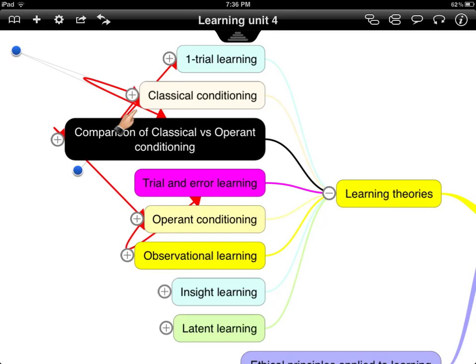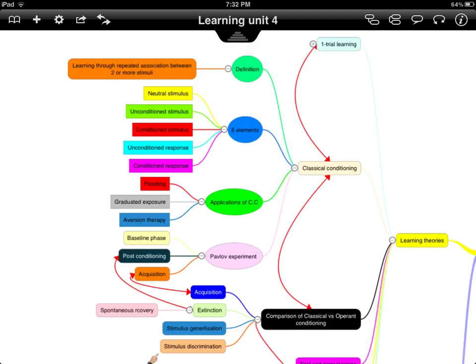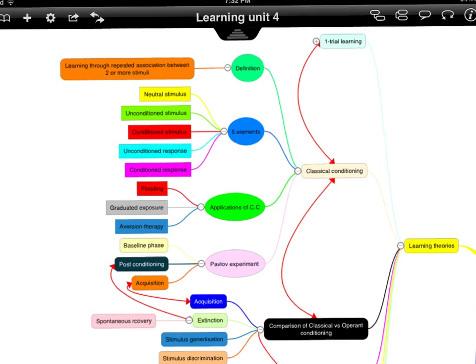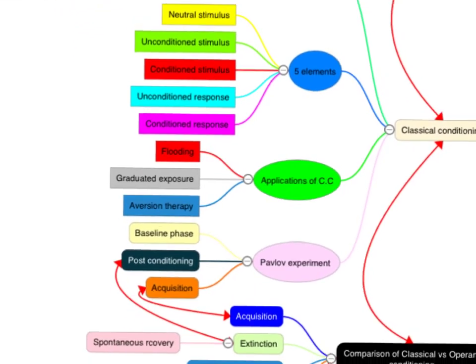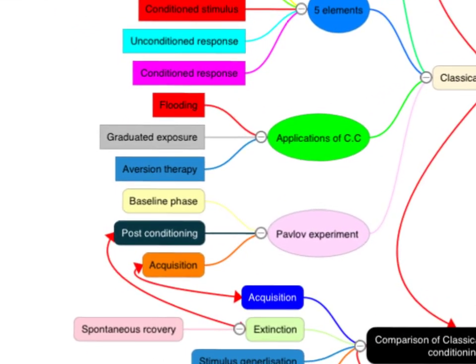In Unit 4, there's a variety of learning theories we need to cover. In this clip, we're just going to focus on classical conditioning. In terms of what we need to know about classical conditioning, I've already done a clip where we defined classical conditioning and went through the five elements. In a future clip, I will go over the applications, which includes flooding, graduated exposure, and aversion therapy.